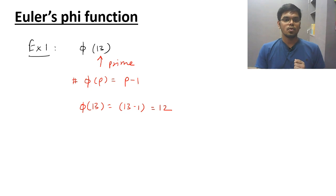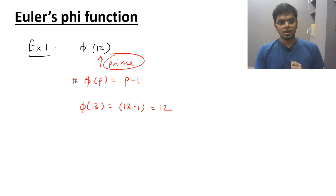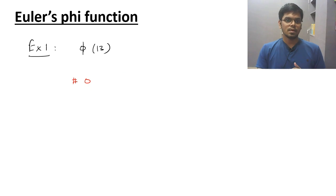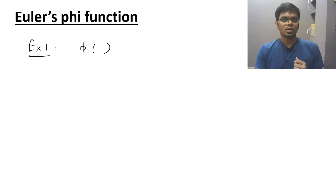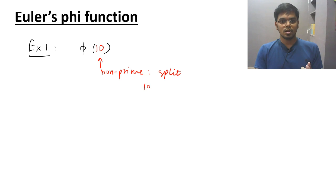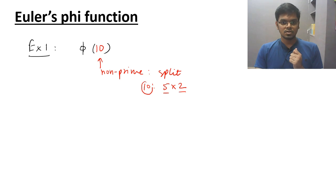That was example one with a prime number. Now the question is what if I have a non-prime number? Example two: find the value of phi of 10. This number is non-prime. Whenever you have a non-prime number you can split the number — I can write 10 as 5 times 2. I have split it into prime numbers, converting this non-prime into a product of prime numbers.